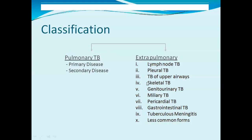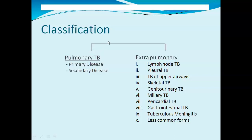If the infection occurs in other organs or parts of the body besides the lungs, it is called extra-pulmonary tuberculosis. Examples include lymph node tuberculosis, pleural tuberculosis, TB of the upper airways, skeletal tuberculosis, genito-urinary tuberculosis, miliary tuberculosis, pericardial tuberculosis, gastrointestinal tuberculosis, and tuberculosis meningitis.